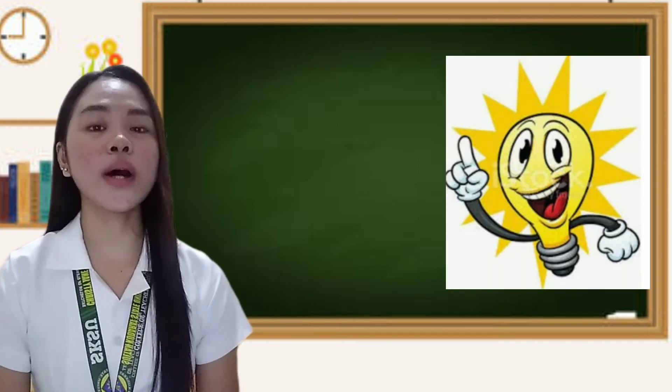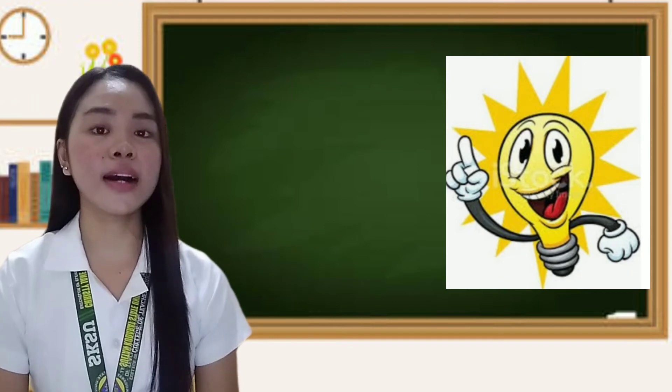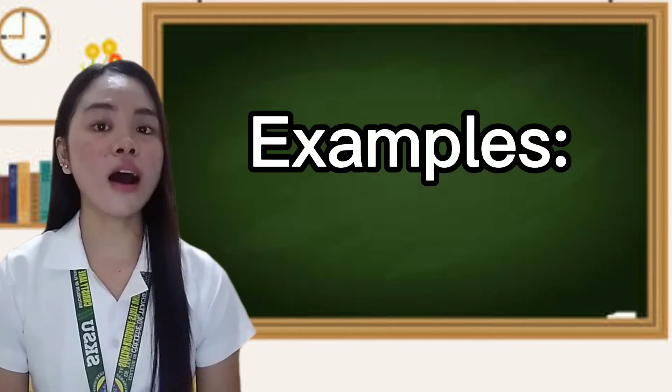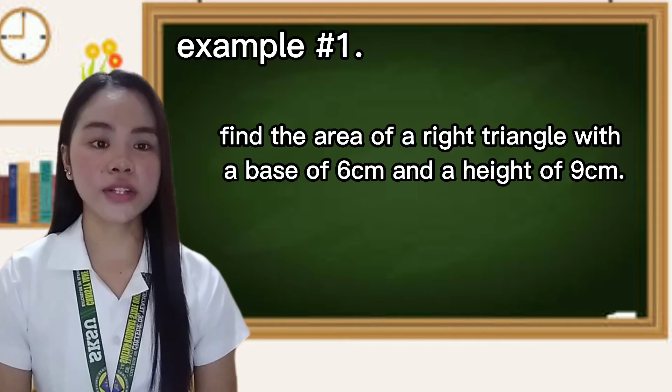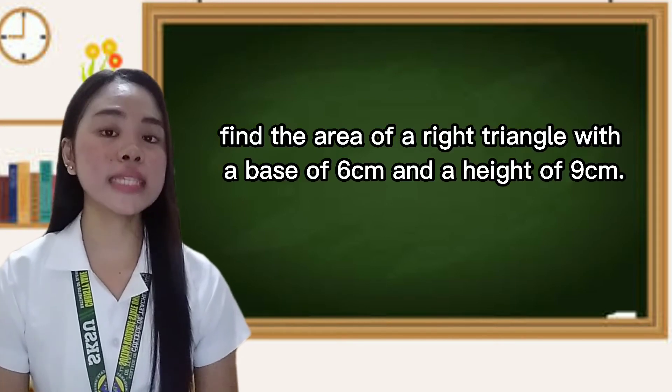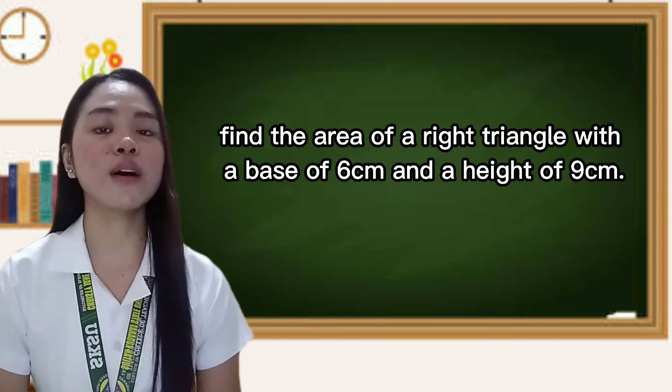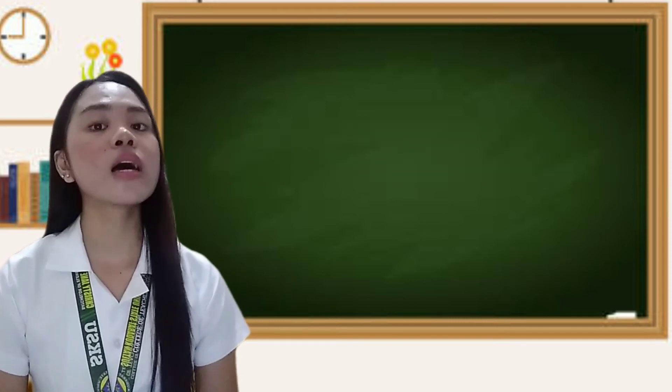Here are our examples. Example number one: find the area of a right triangle with a base of six centimeters and a height of nine centimeters.